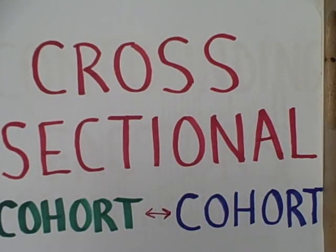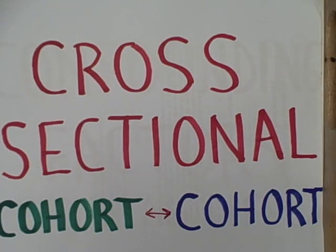There are two basic methods for lifespan research: cross-sectional and longitudinal. Each one of these has advantages and disadvantages for the researcher.